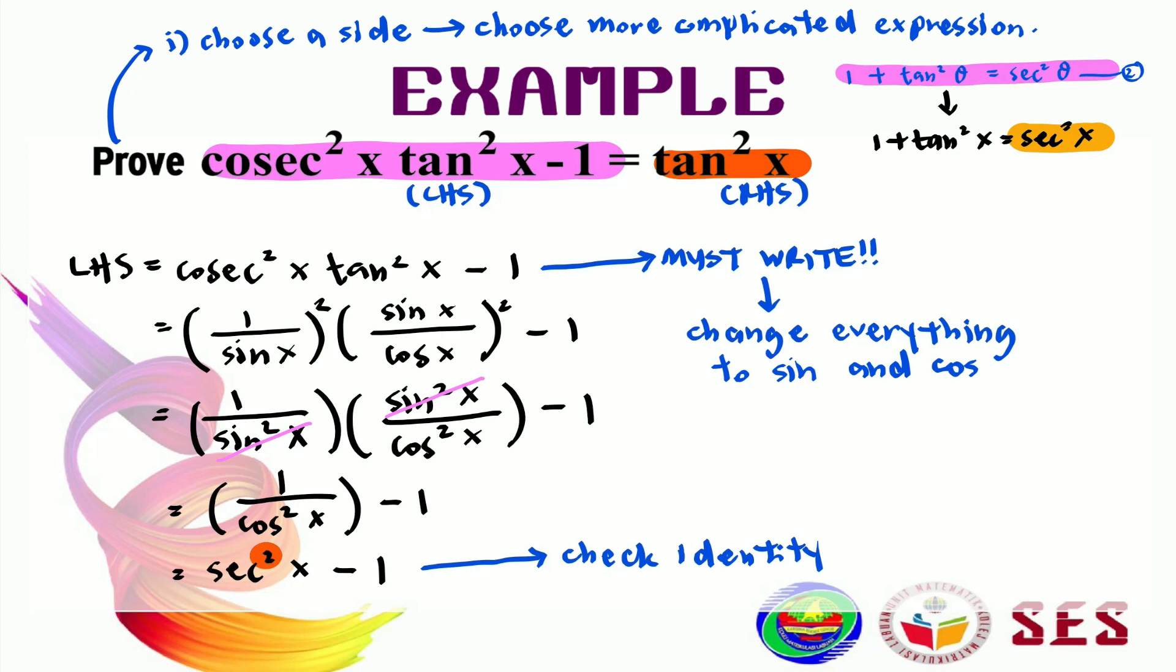And if I substitute that here, 1 plus tan squared x minus 1, which is just equal to tan squared x. See, now this is our right-hand side. This proving that I showed you is a proper way to answer proving questions from one side to another. Never prove both sides together side by side.